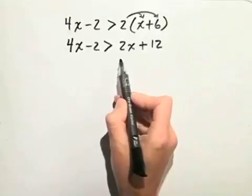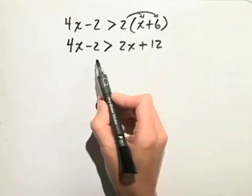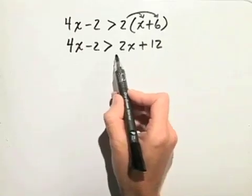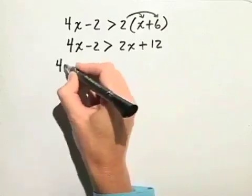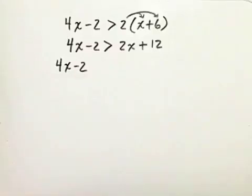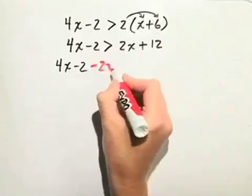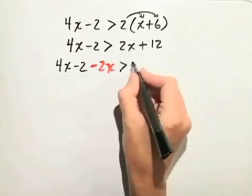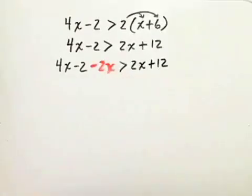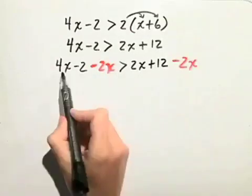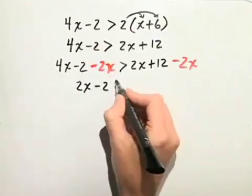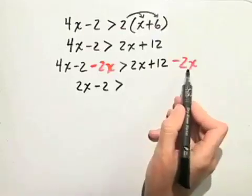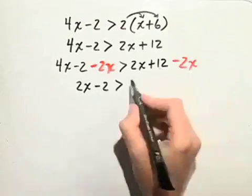Next, we have to decide which side we want to put the variables on and which side we want to put the constants on. Let's decide to put the variables on the left-hand side, so we'll subtract 2x from both sides of the inequality. So 4x minus 2 minus 2x is greater than 2x plus 12, and again, minus 2x. On the left-hand side, 4x minus 2x is just 2x, and we still have the minus 2, is greater than, on the right-hand side, the 2x minus 2x add to 0, so we just have 12.